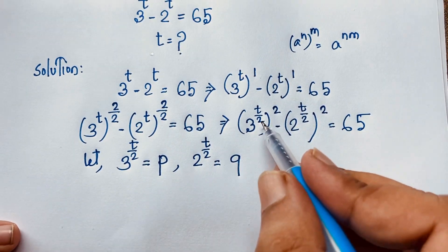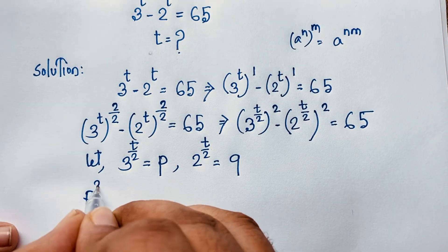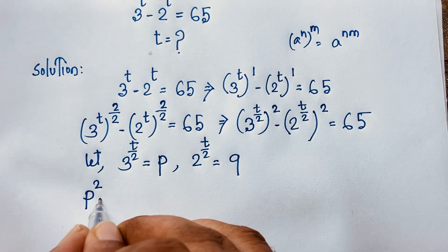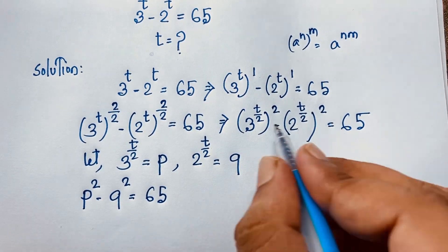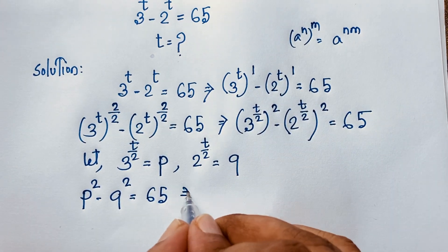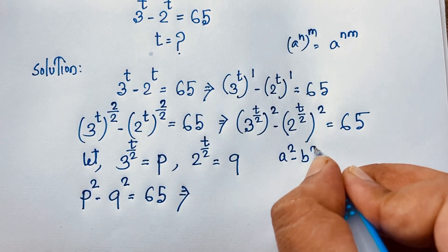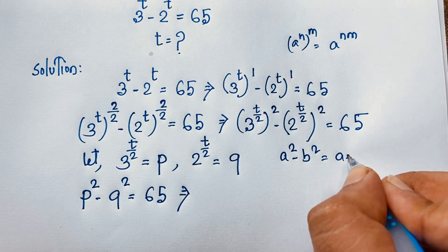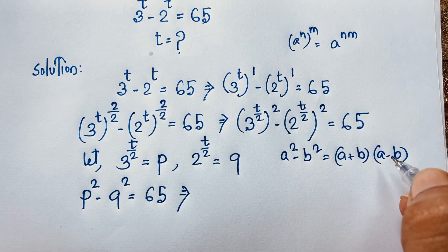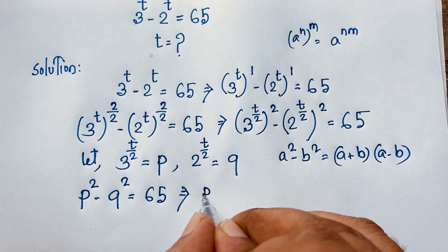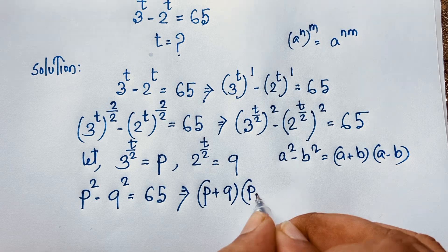Now the expression becomes p squared minus q squared equals 65. Applying the algebraic formula a squared minus b squared equals a plus b times a minus b, this becomes p plus q times p minus q equals 65.